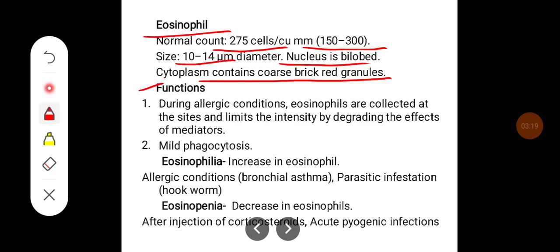Some functions of eosinophil are during allergic conditions, eosinophils are collected at the site and limit the intensity of inflammation by degrading the effects of inflammatory mediators. It leads also to mild phagocytosis.